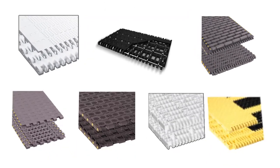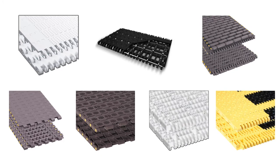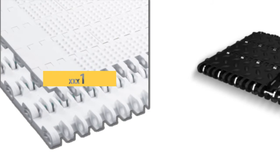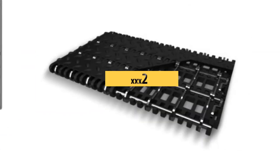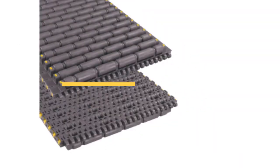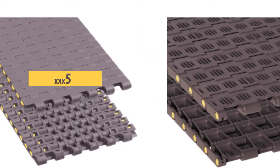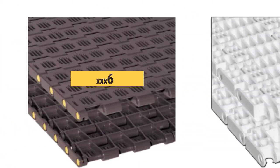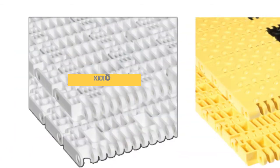There are seven possible surface styles of MatTOP chain. They include nub top, perforated safety top, roller top low backline pressure, solid top, perforated, open area, and safety top.